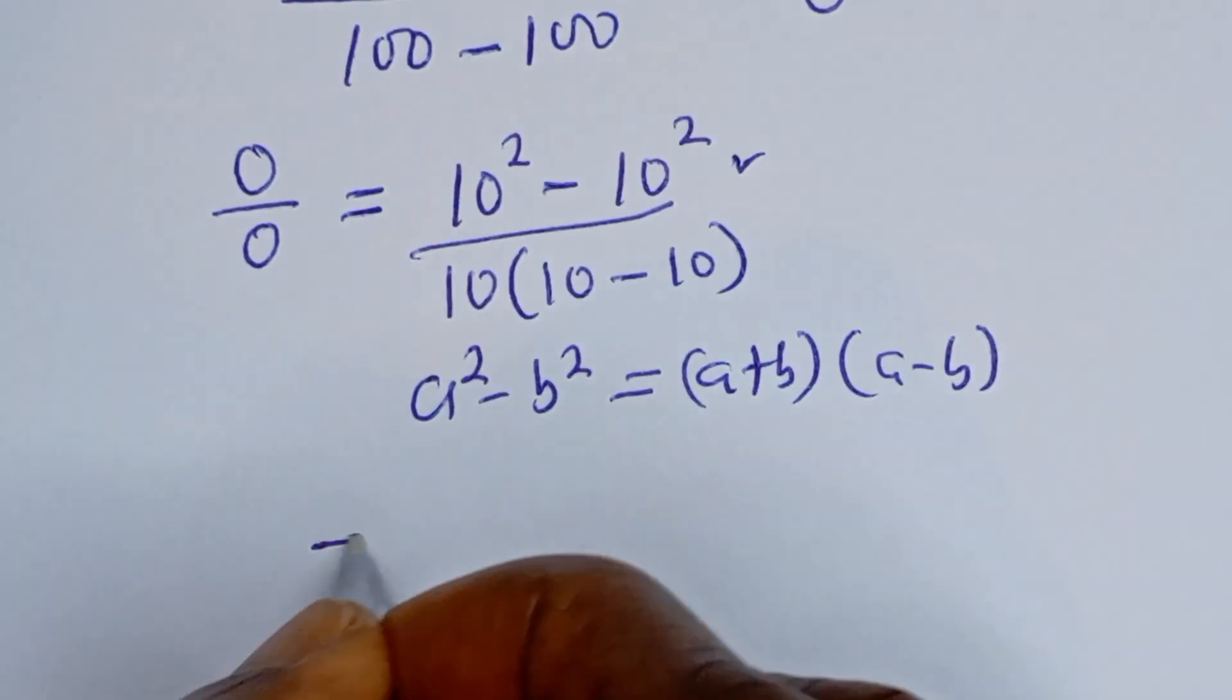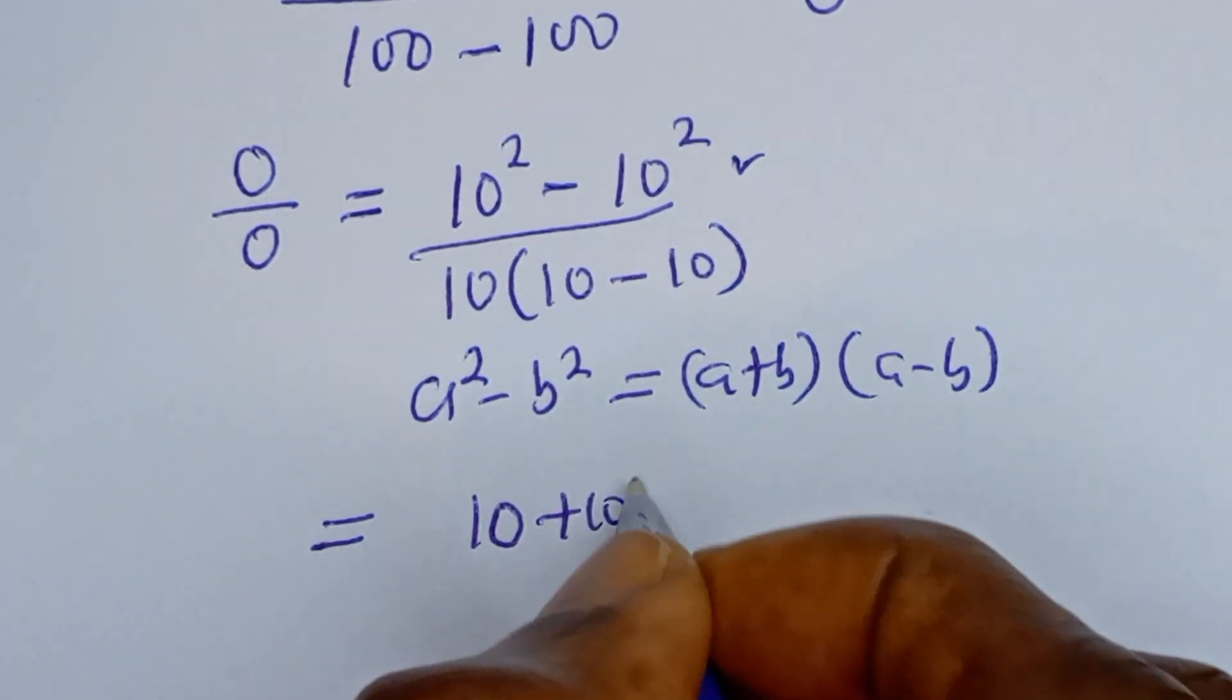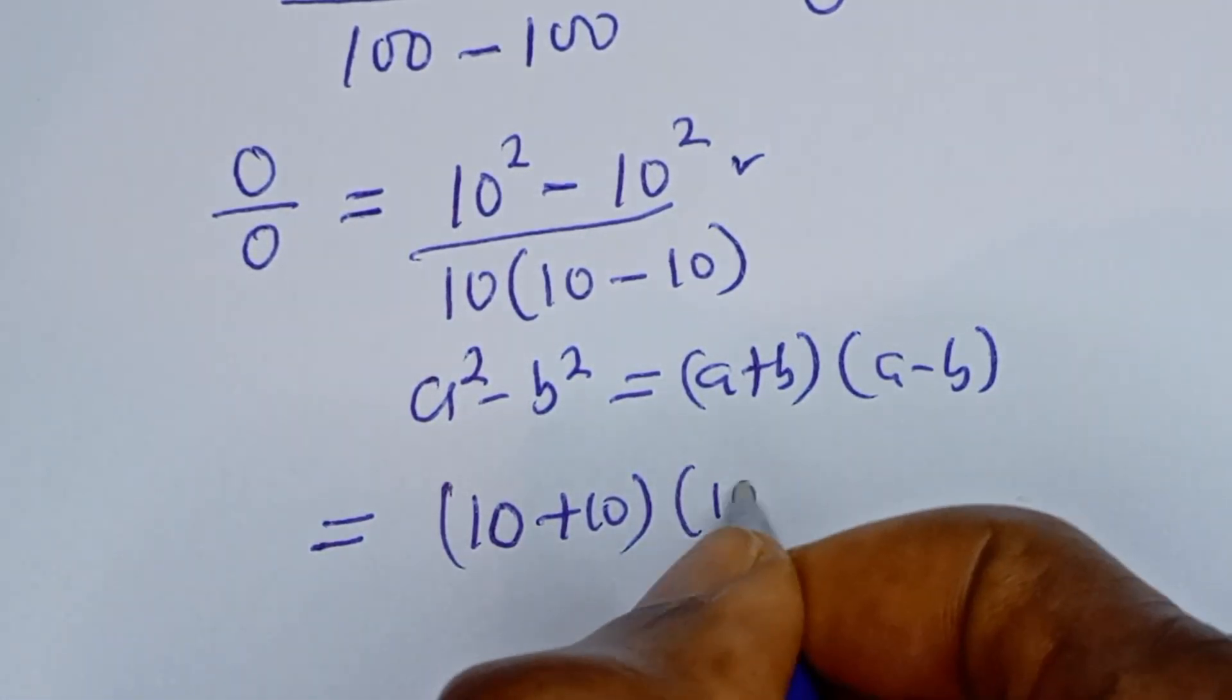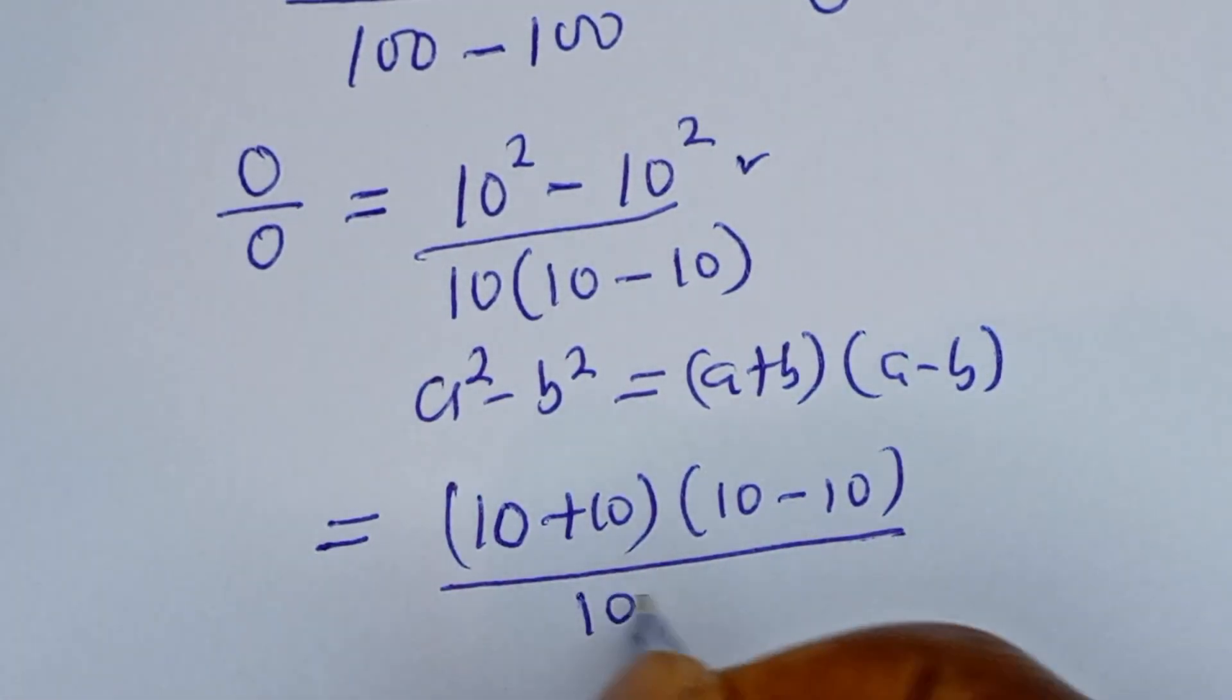Let's substitute, equal to 10 plus 10 bracket, 10 minus 10, divided by 10 bracket, 10 minus 10.